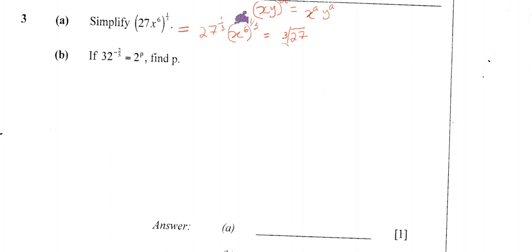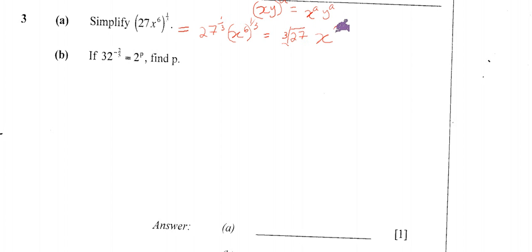When you have something inside the brackets with a power and then another power outside the brackets, by the law of indices you multiply the powers. Which means here we say 6 multiplied by 1/3. So this becomes x to the power 6 multiplied by 1 over 3.